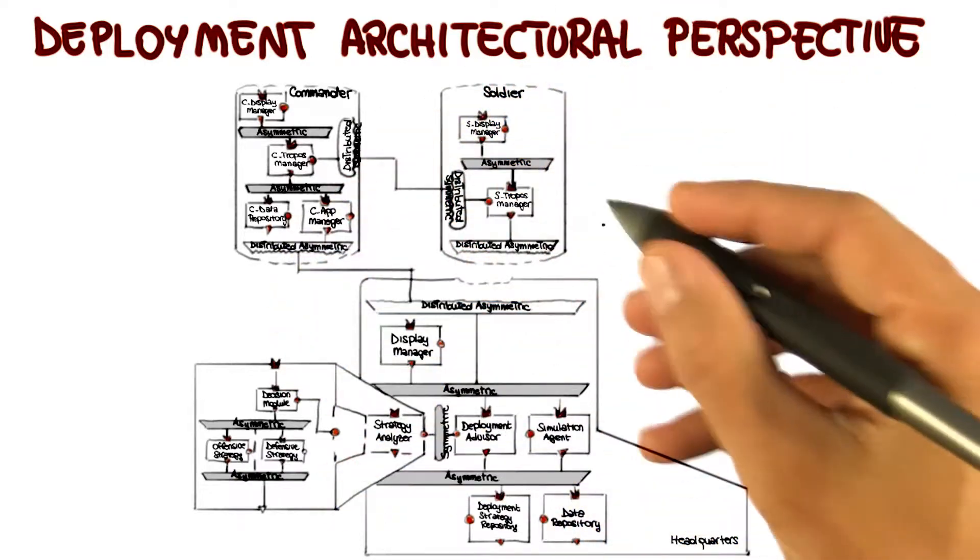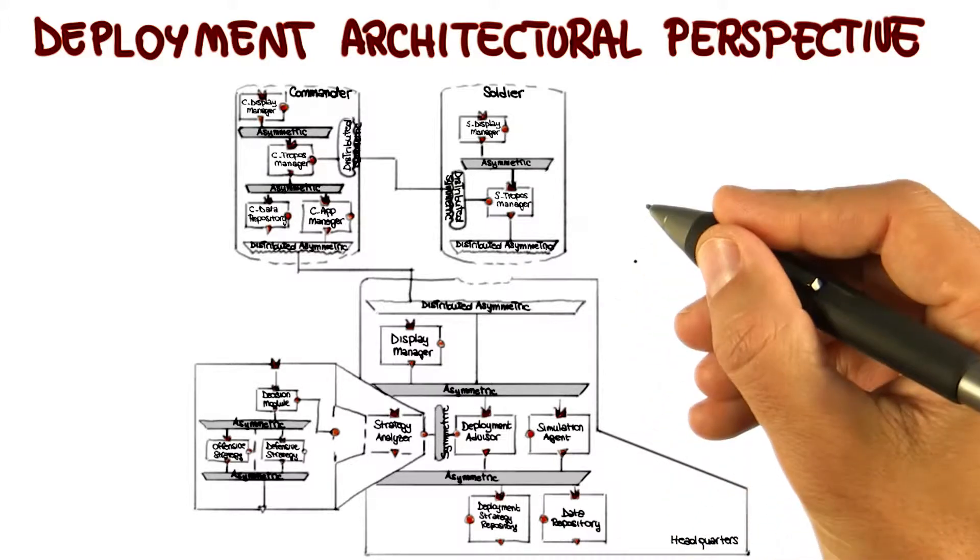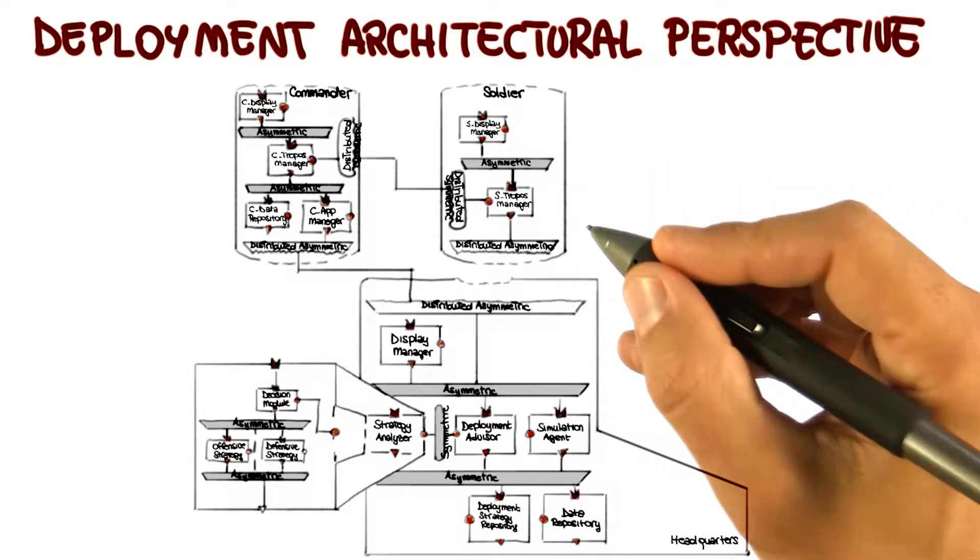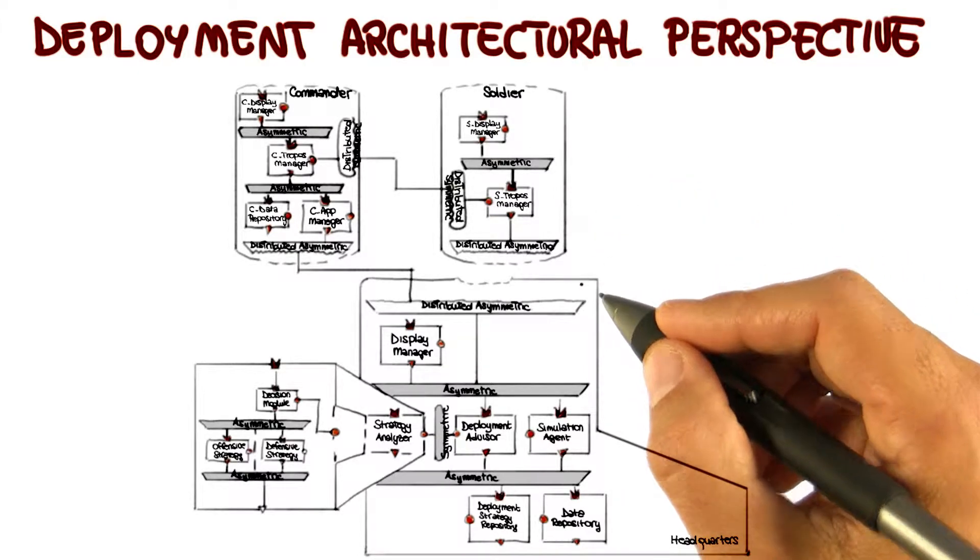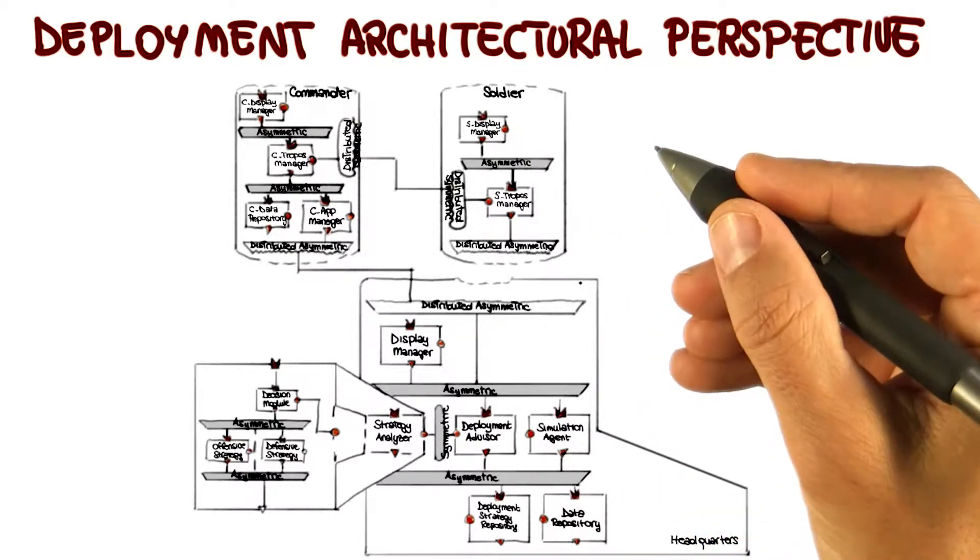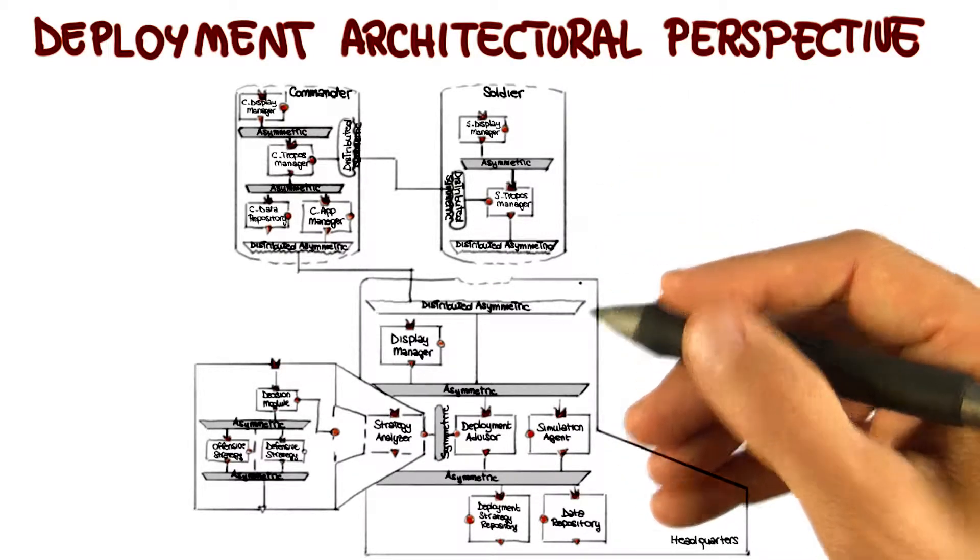So why do we do this? Why do we create a deployment perspective for our architecture? Well, because the deployment view of an architecture can be critical in assessing whether the system will be able to satisfy its requirements. Because doing this mapping allows you to discover and assess other characteristics of your system that you might not have considered up to now.